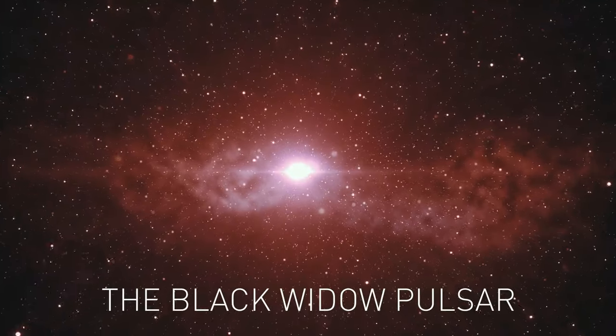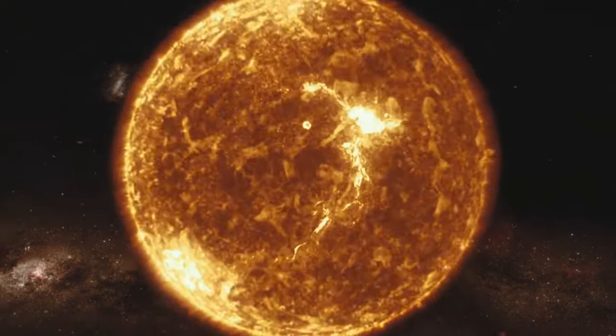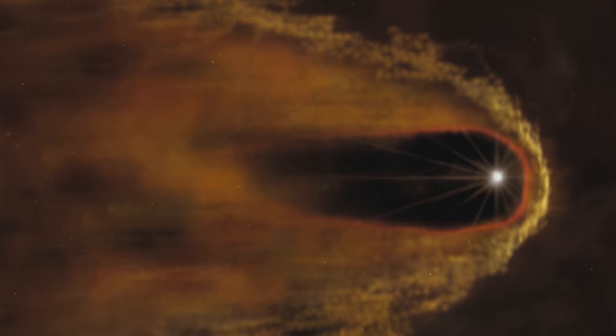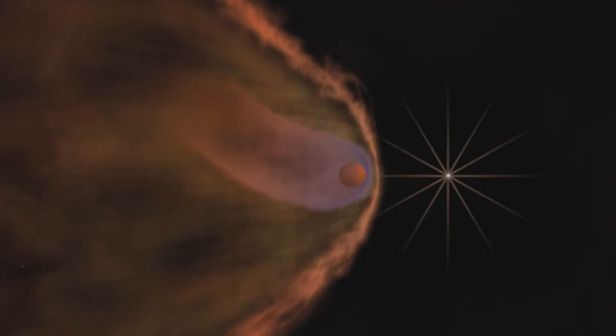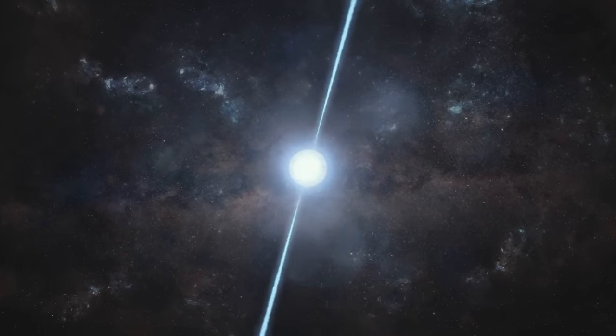The Black Widow pulsar is a rotating neutron star that is munching on its partner, which is a lightweight brown dwarf star. The more material the pulsar consumes, the more slowly it spins. The energy the neutron star is losing in the process causes the companion star to dwindle.